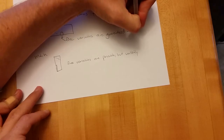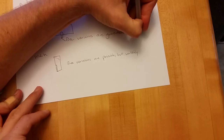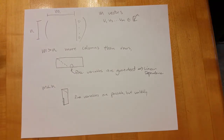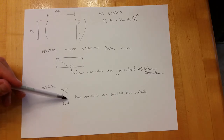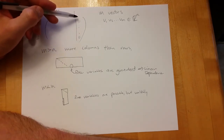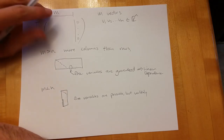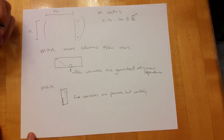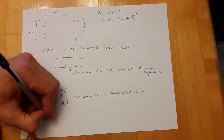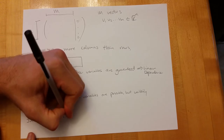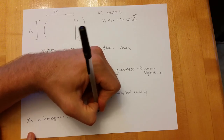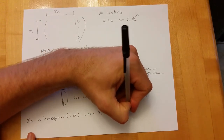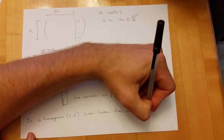So free variables on a wide matrix are guaranteed, which implies linear dependence. As soon as you have one free variable you know you're dependent, because you can set that free variable to be non-zero and you have your non-trivial solution. If you have no free variables in a homogeneous system, each variable is forced to be zero. So: in a homogeneous (equal to zero) system, free variables imply linear dependence.